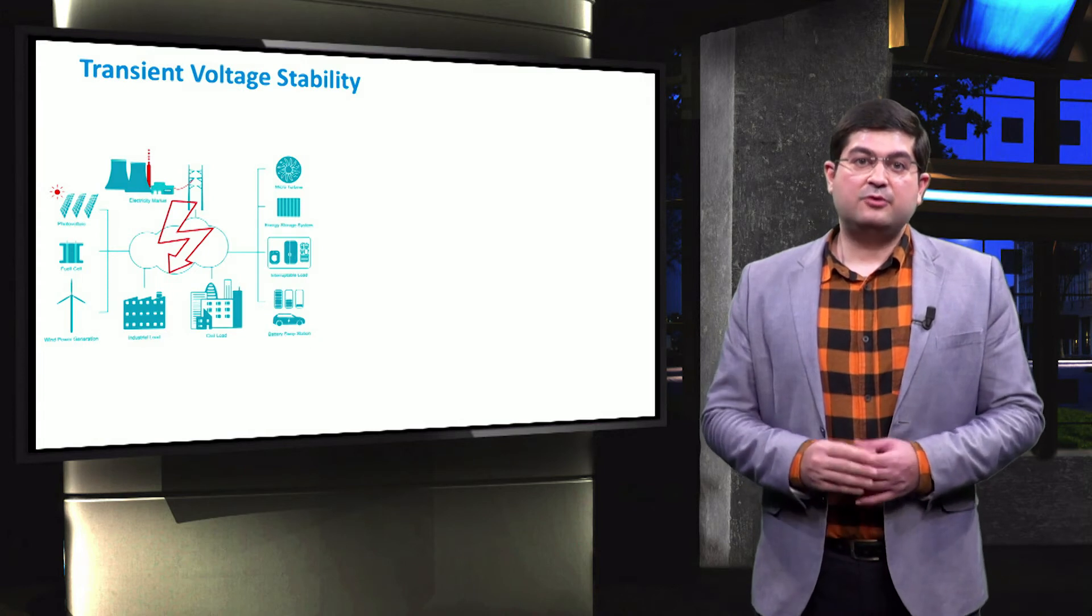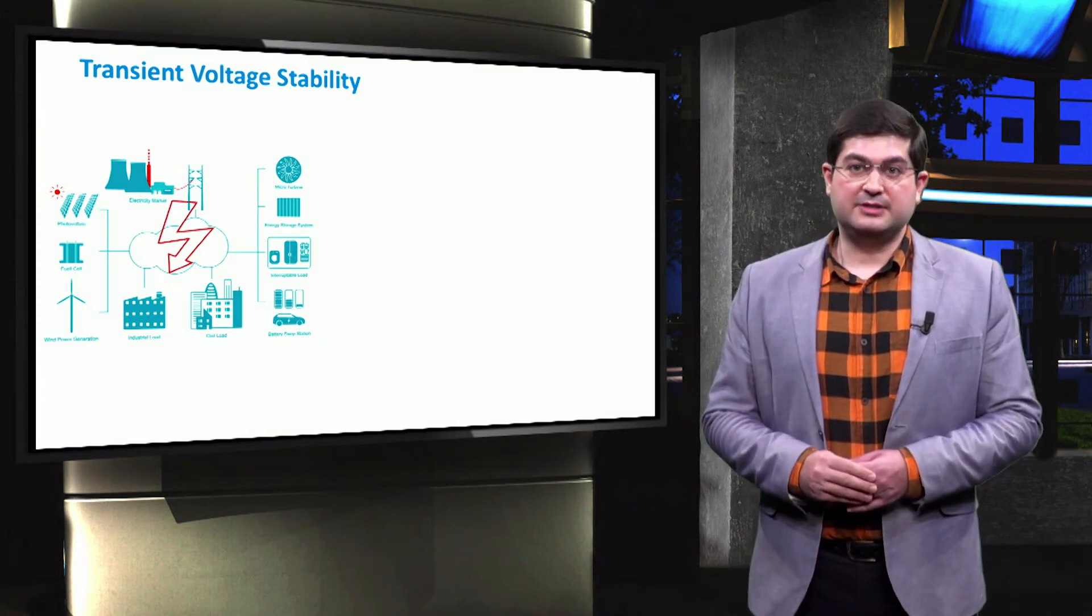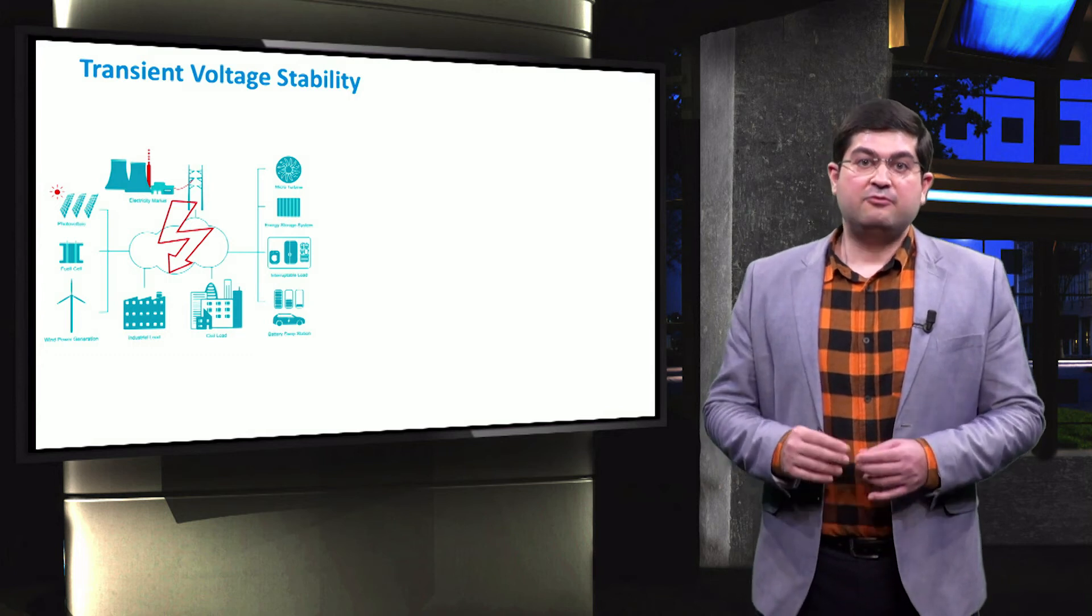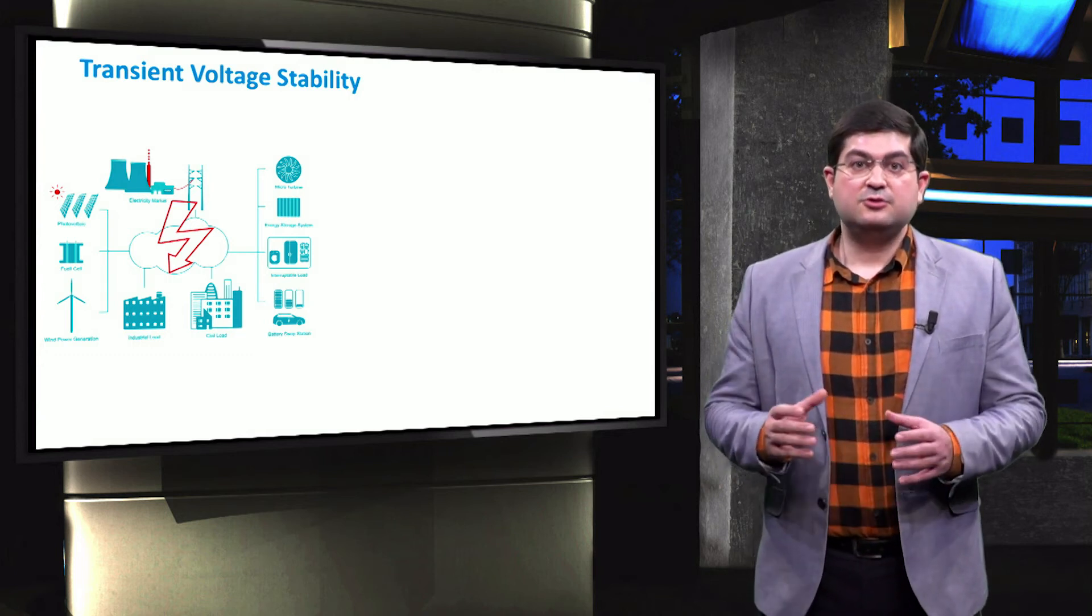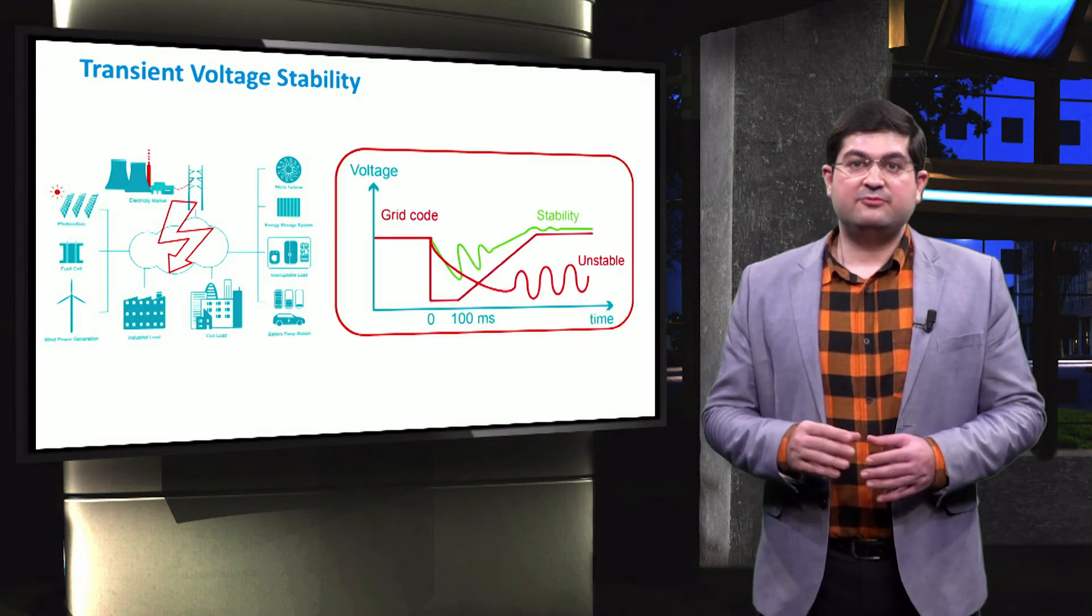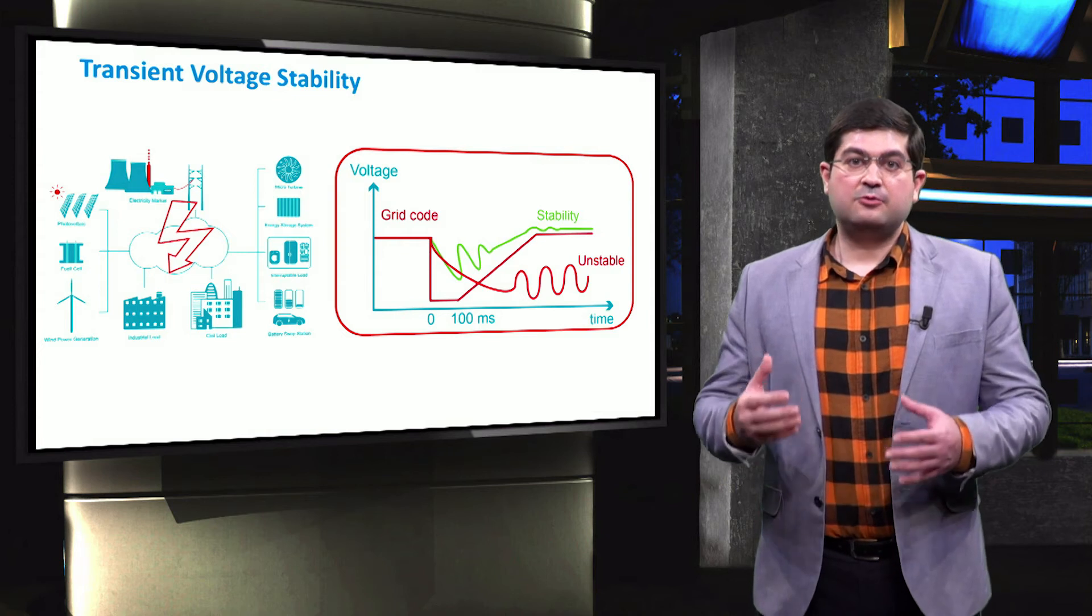We can also address more voltage issues within microgrids. For instance, within a short period of time, voltage transient instabilities can occur due to faults. As shown in the figure, when the voltage drops after the occurrence of the fault,